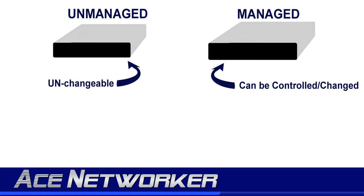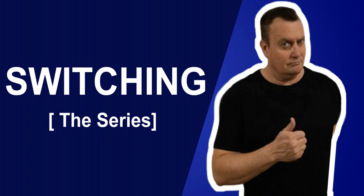An unmanaged switch is unchangeable and only performs basic switching functions. You can think of it kind of like a smart hub — it doesn't work like a hub, but similarly you cannot make any changes to it. You just plug it in, and however it is designed to handle traffic, that's exactly what it's going to do. This wraps up our series on Layer 2 switches. Make sure to check out the other videos in this series. I'm Clint Garrett, Ace Networker, and I'll see you on the next video.